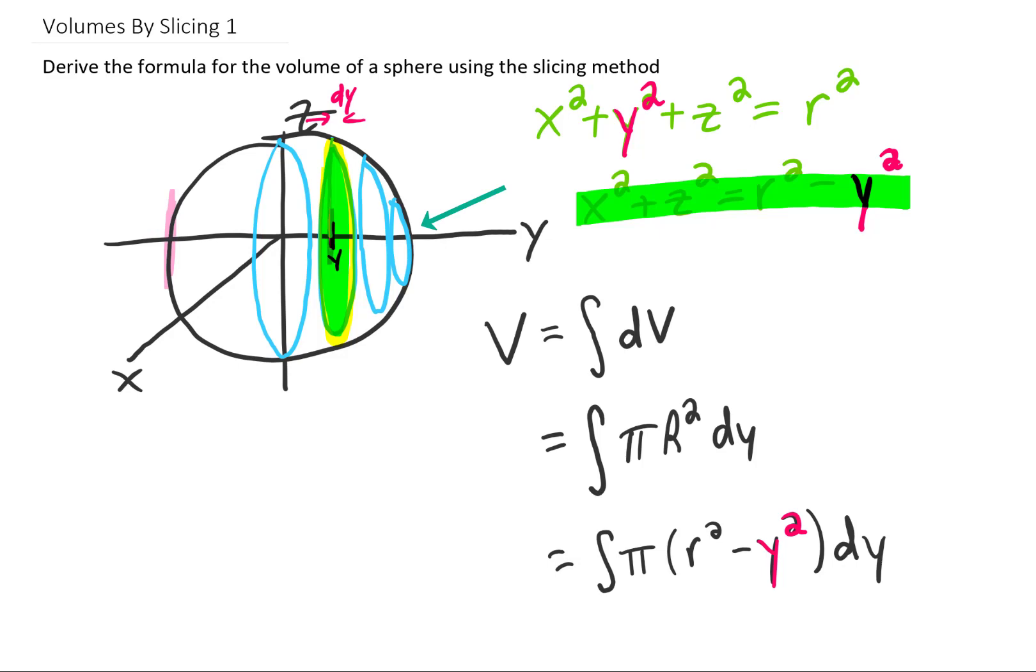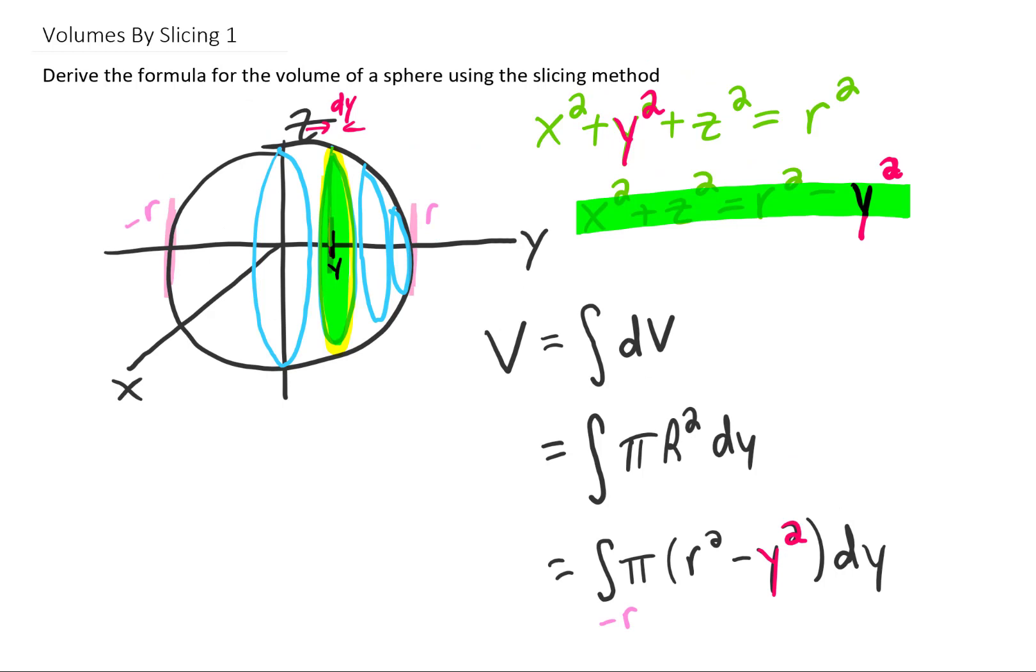The largest value of y that we could come up with would be r. So our limits of integration on this integral down here are going to go from y equals negative r to y equals positive r.